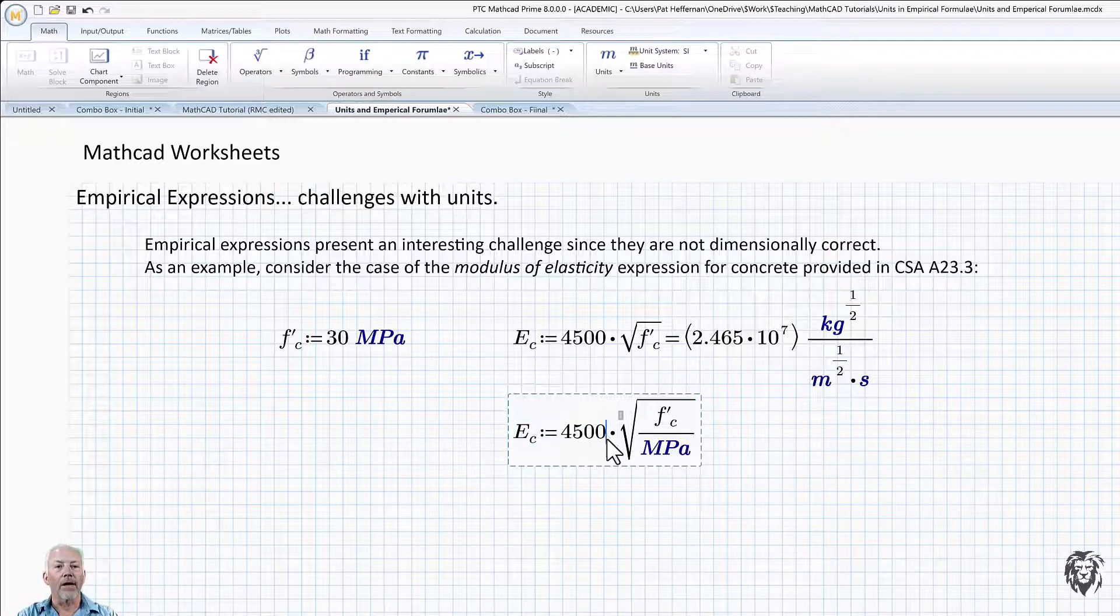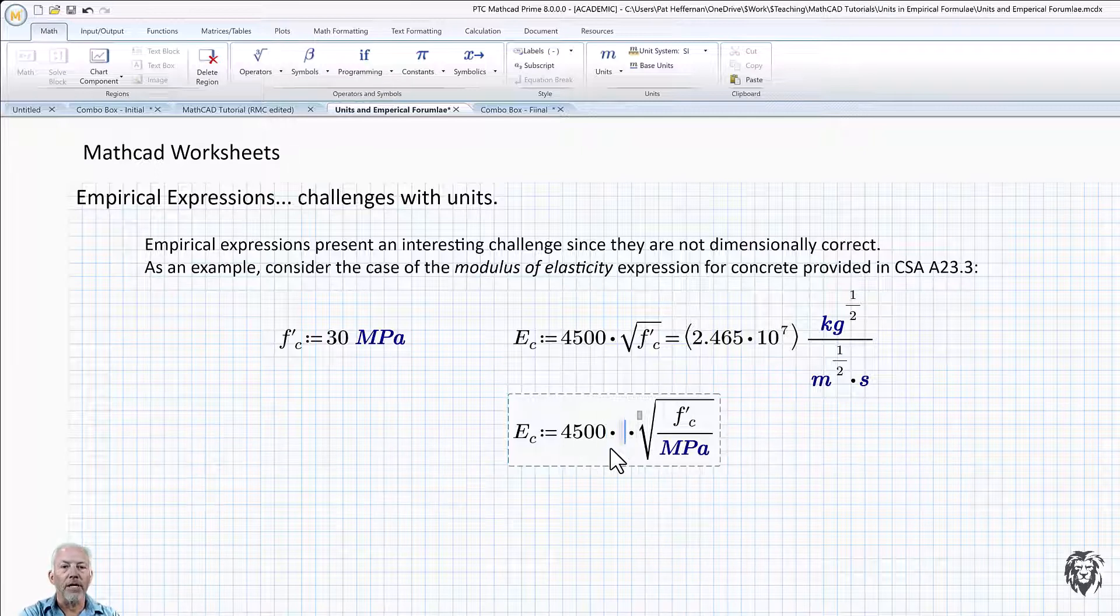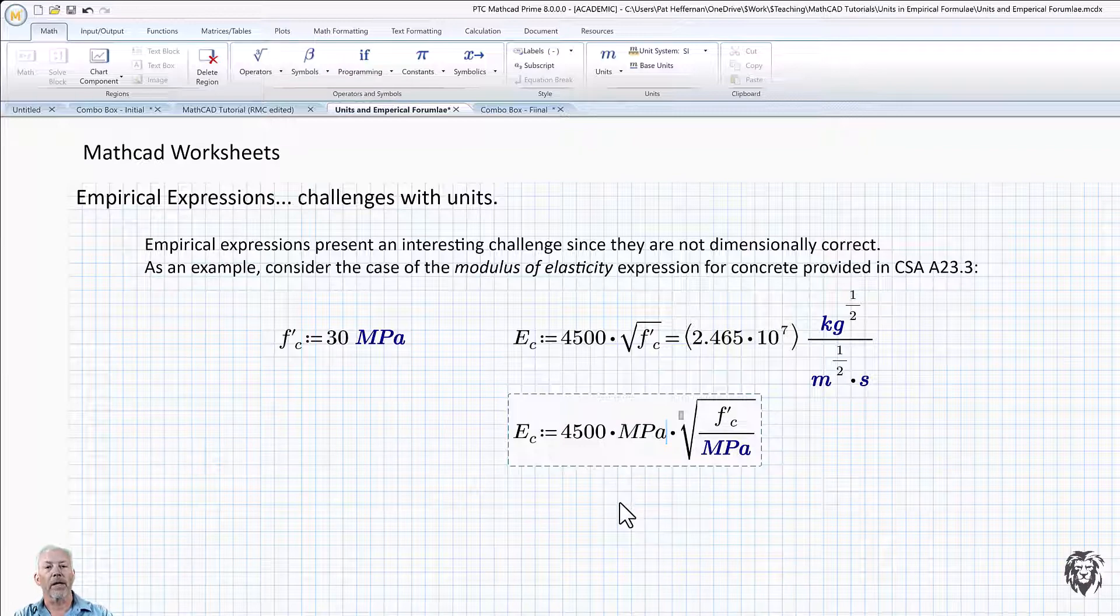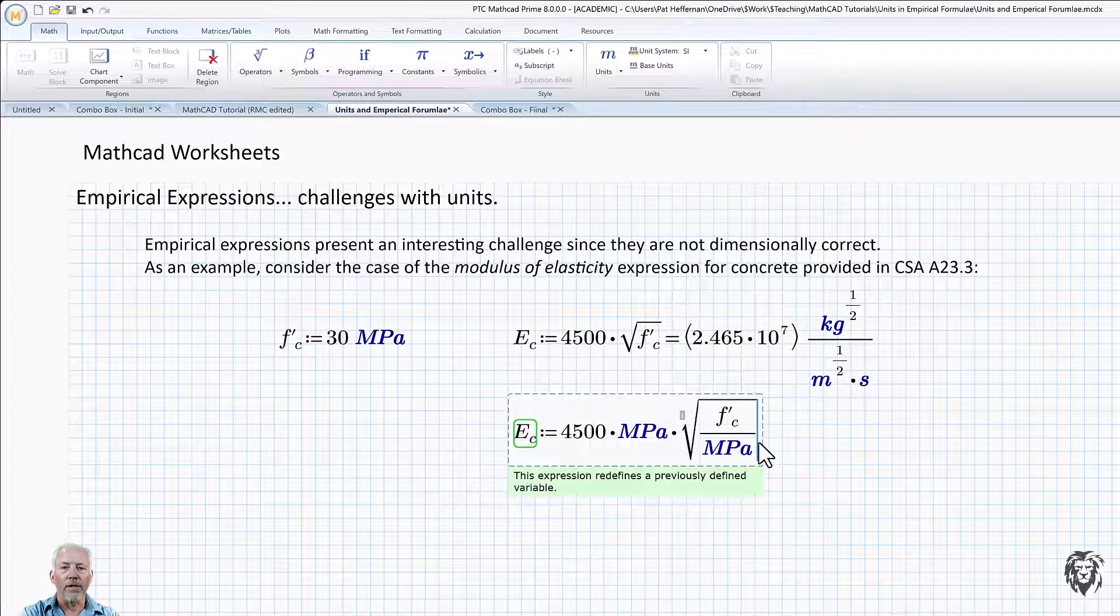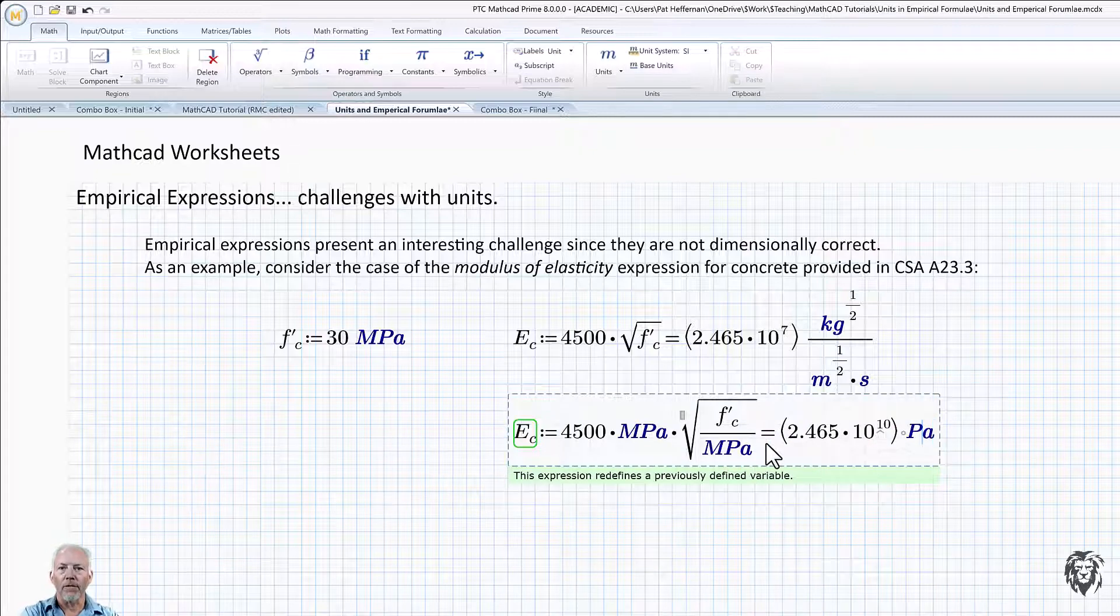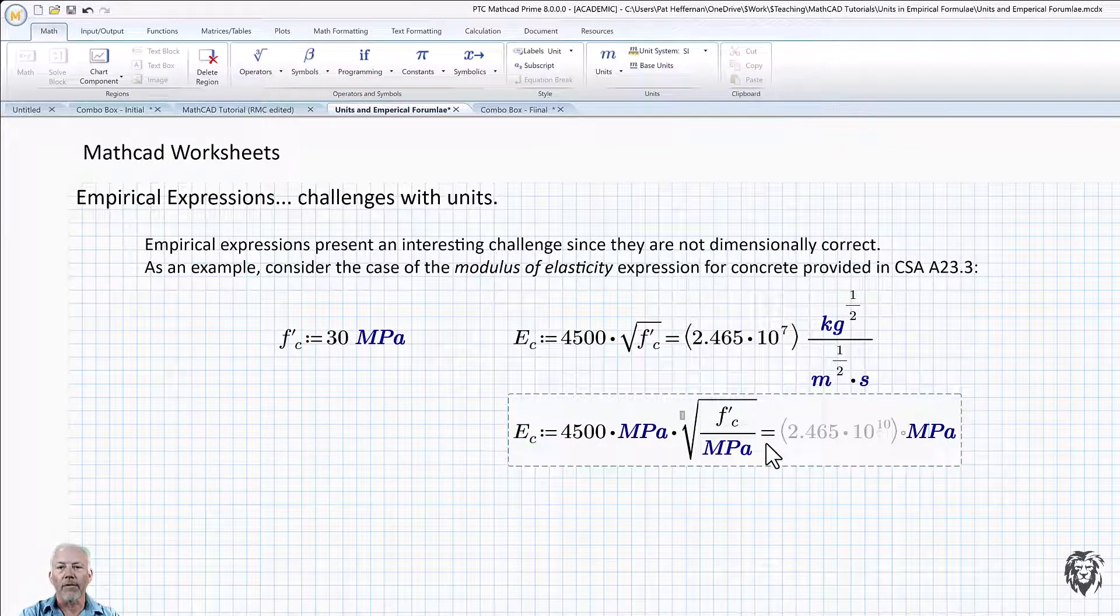And then all I have to do is on this coefficient multiply it by the units that are supposed to come out of the formula. And if we choose megapascals again, we're going to get the right units out. And so we see our value coming out in megapascals.